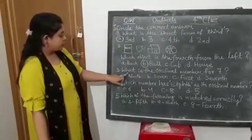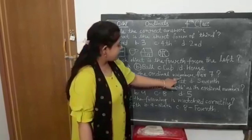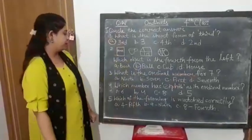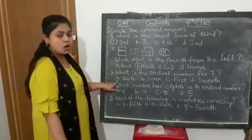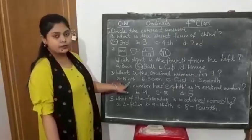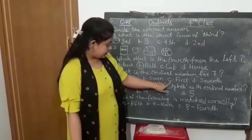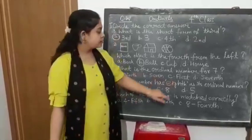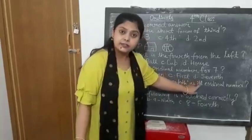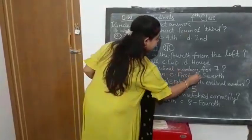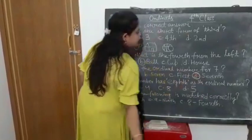Now number 3. What is the ordinal number for 7? See, first option A: Ninth, B: Seven, C: First, D: Seventh. So what is the answer here? D. Circle option D.